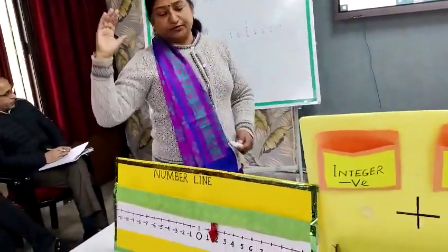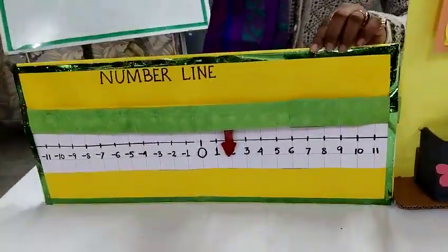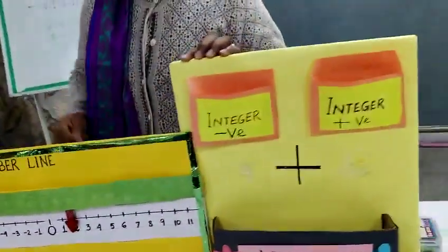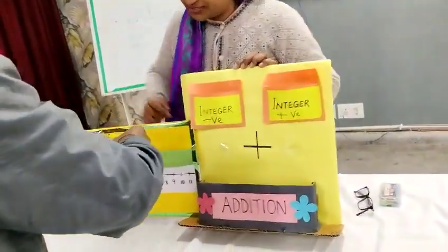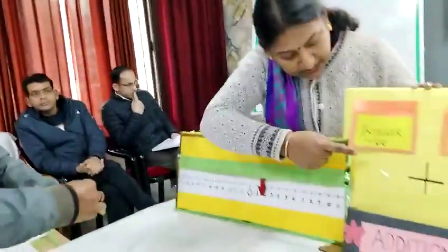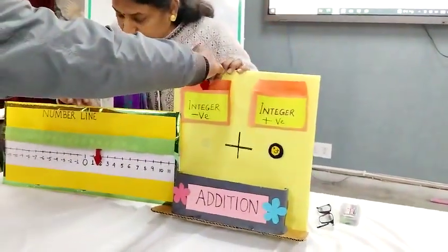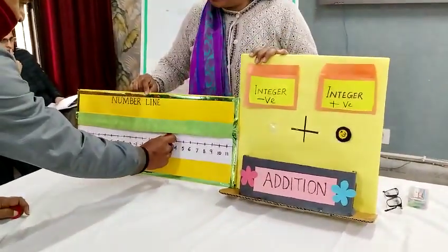Now for the blackboard activity — this is the number line model. Anyone can come and help me find one number from the pockets. There are two pockets: positive and negative. First take a number from the positive pocket. What is it? It is plus 3. Please represent it on the number line — make this pointer move and place it on the particular position.